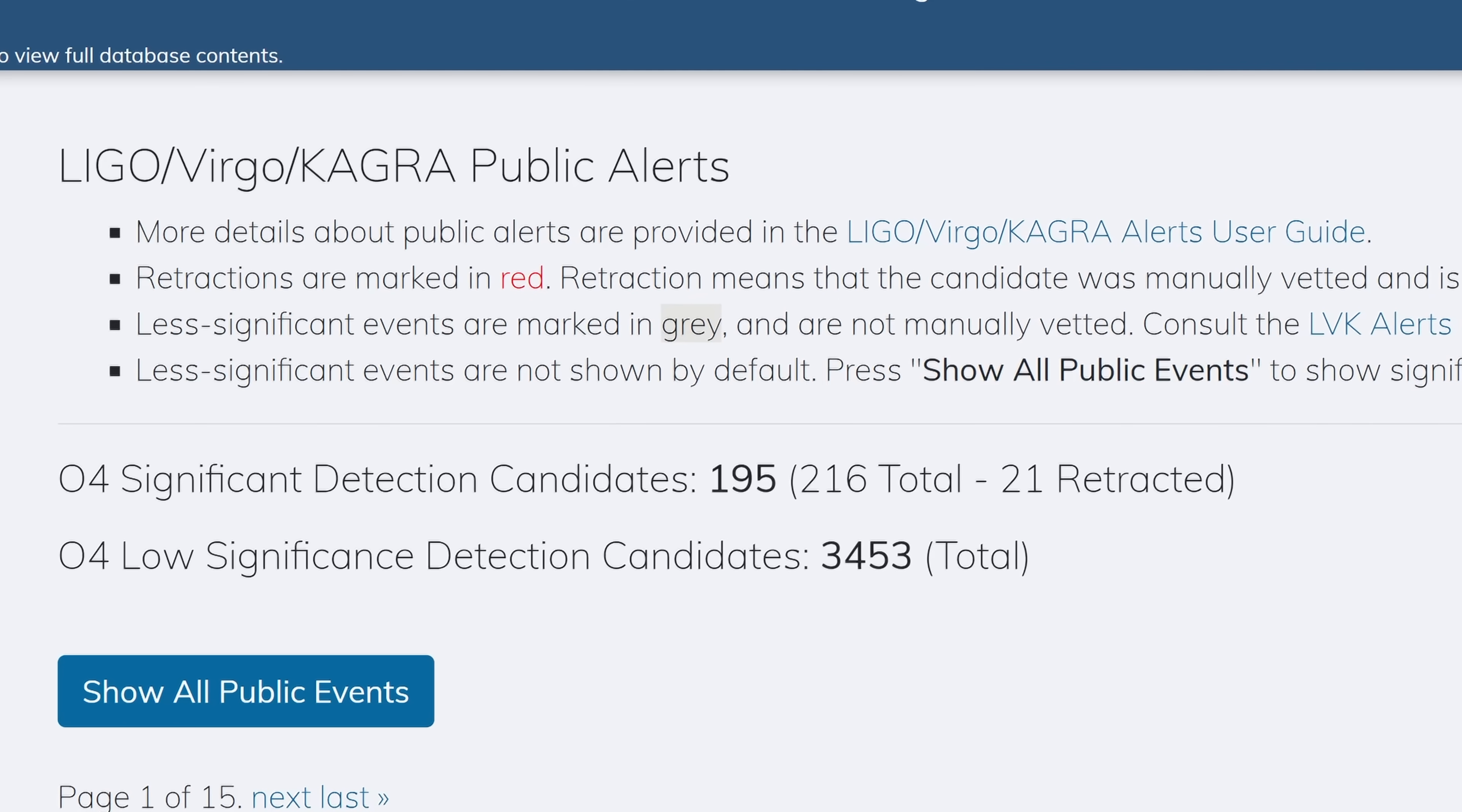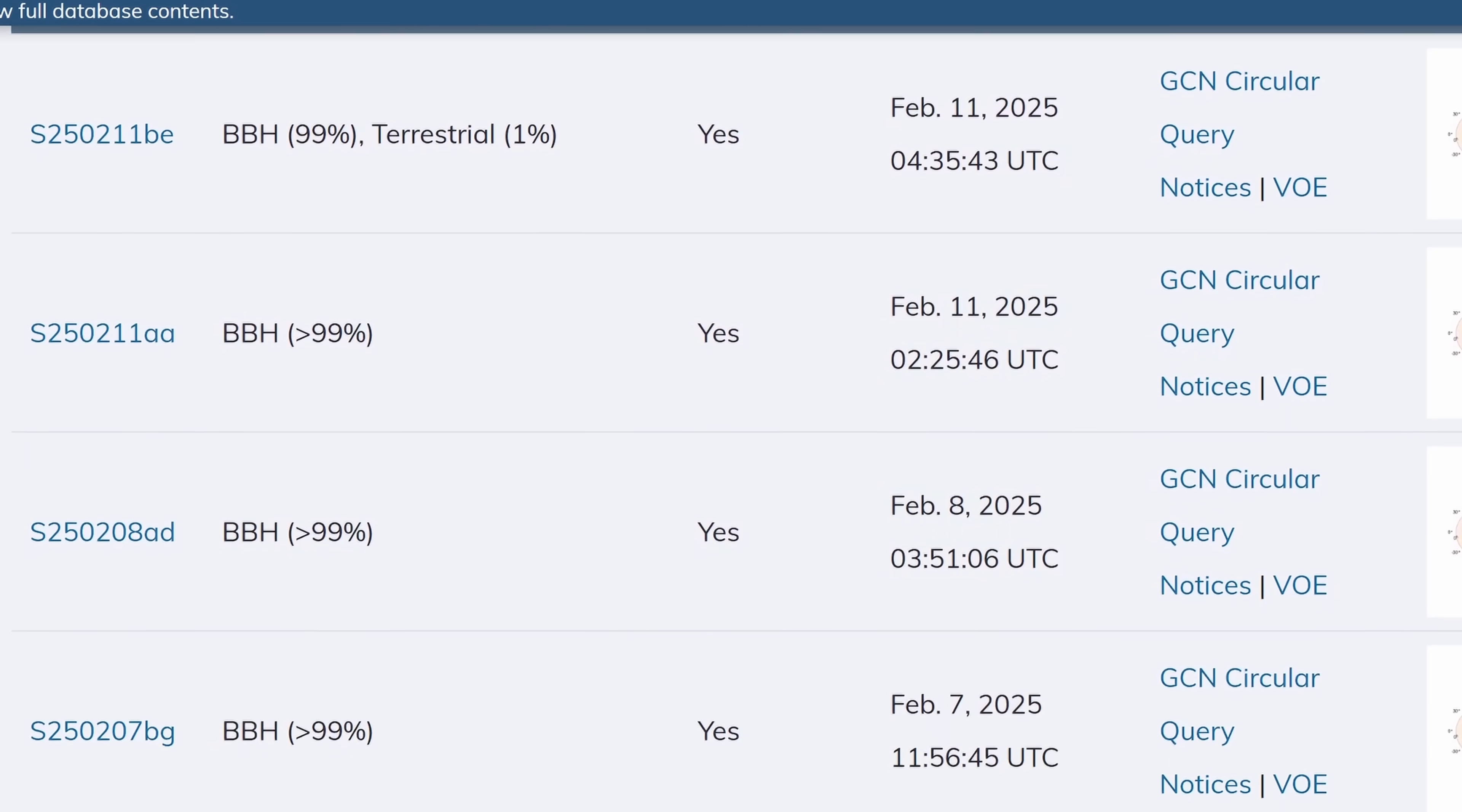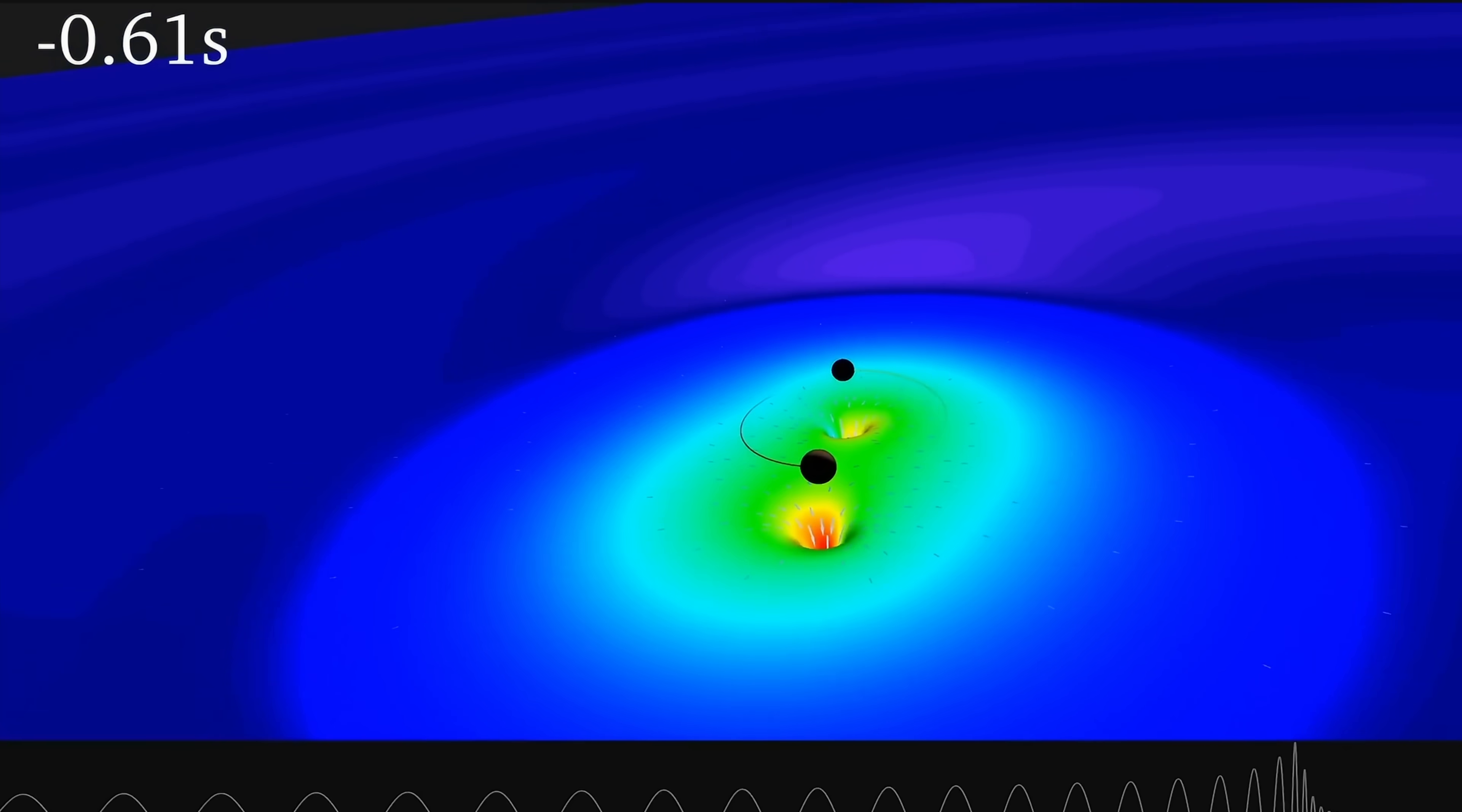As a matter of fact almost 3500 candidates have been discovered and 195 have been officially confirmed. This is on February of 2025 by the way. But out of all of these candidates and detections only one of them was basically multi-signal. Everything else was only visible as a gravitational wave. And that's despite the fact that we've seen a lot of different things collide over time.